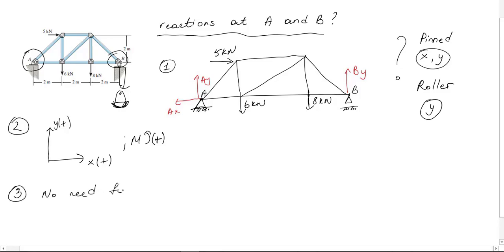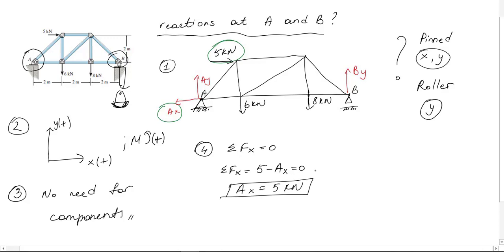Third procedure was divide into components, but we don't need that because all forces are perpendicular to the moment arm. For x we just have only two forces in total: positive five kilonewton and negative Ax. From here I get five kilonewton for Ax. Positive result means that I don't have to change direction.